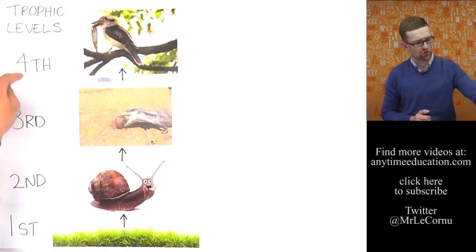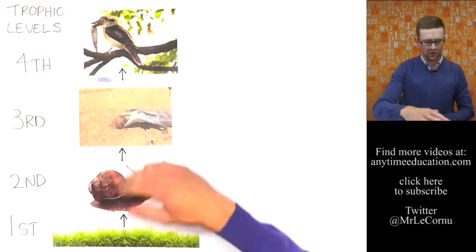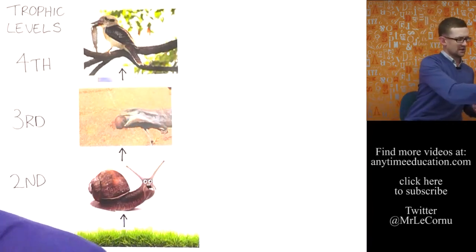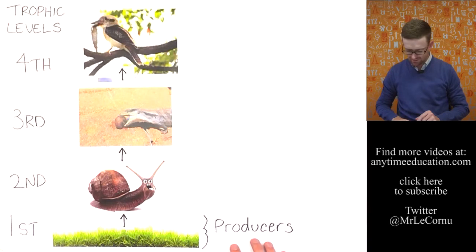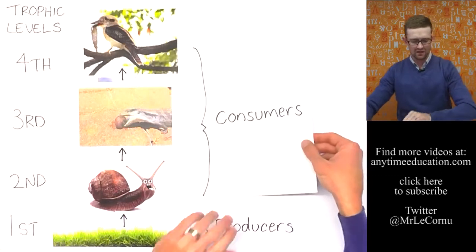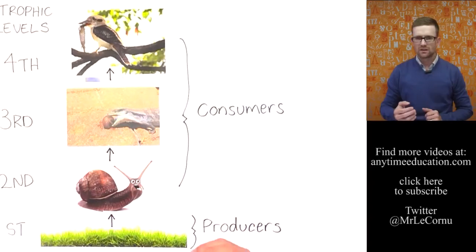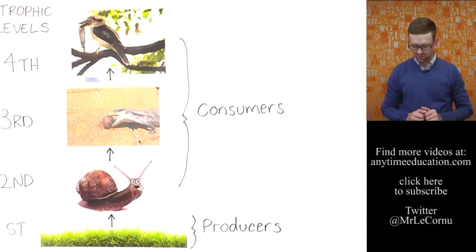So as well as looking at the trophic levels of a food chain we can also categorize the different organisms in the food chain in particular ways. For example the grass down the bottom here we would categorize the grass as the producers in this food chain or the producer organism. The other three organisms fit into a category which we call consumers. They're called consumers because they're consuming or eating other organisms. These are called producers because they are actually producing the food source for the rest of the food chain and that's what we're going to get more into in this lesson.